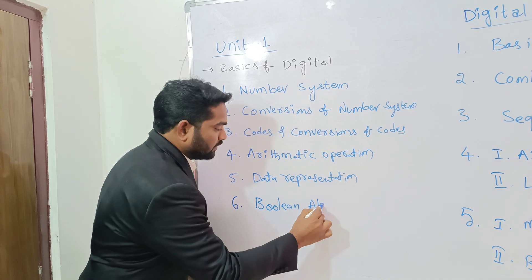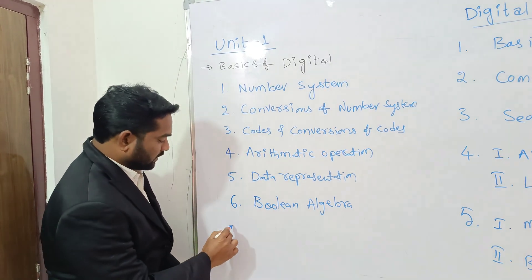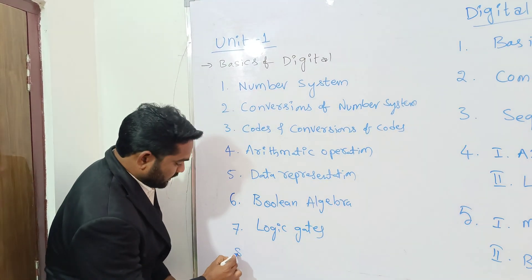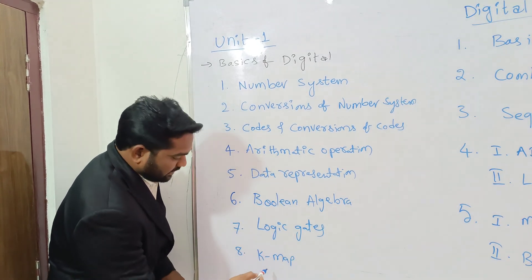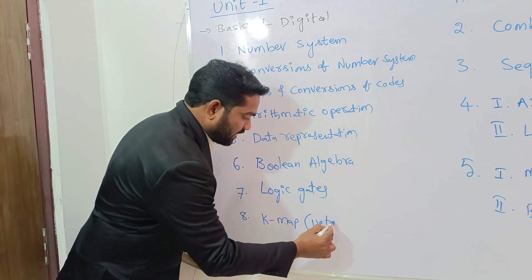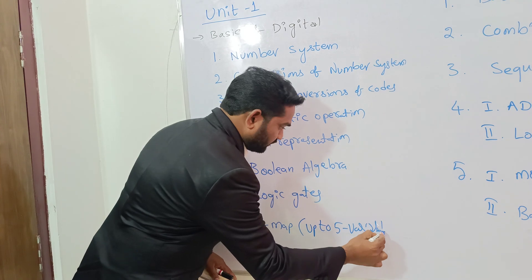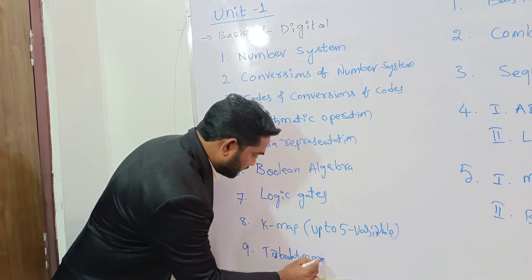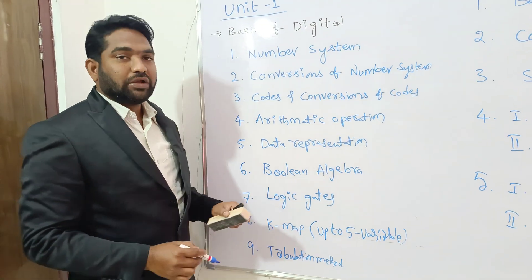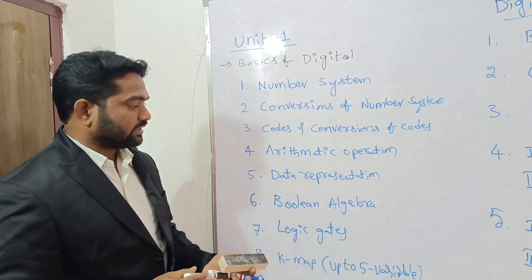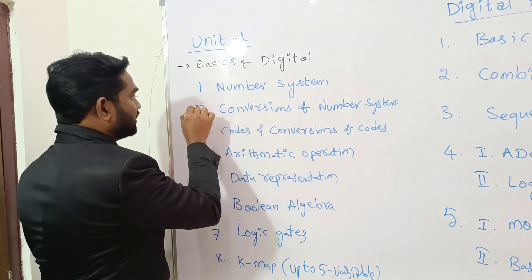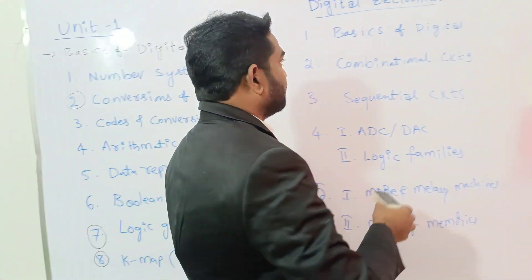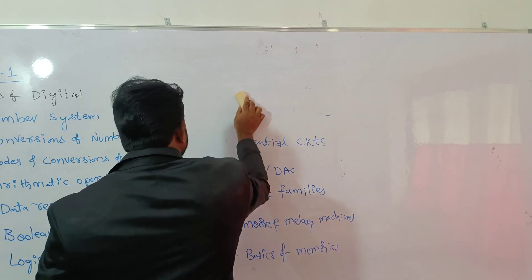The seventh point is Boolean Algebra — a very important topic. The eighth point is Logic Gates, also very important. And the ninth point is K-map, also known as Karnaugh map, which we will learn up to five variables. Finally, the last point is the Tabulation Method. These are the nine concepts in unit one. For GATE, IES and PSUs, we can most expect questions from conversions, logic gates, K-map, and tabulation method.